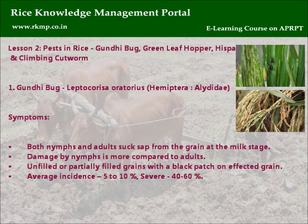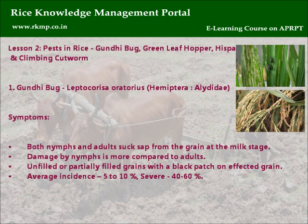Lesson 2: Pests in rice — Gundi Bug, Green Leaf Hopper, Hispa, and Climbing Cutworm. Gundi Bug: Leptocorisa oratorius, Order Hemiptera. Symptoms: Both nymphs and adults suck sap from grains at the milk stage; damage by nymphs is more compared to adults. Result: unfilled or partially filled grains with a black patch on affected grain. Average incidence is 5–10%; severe incidence is 40–60%.